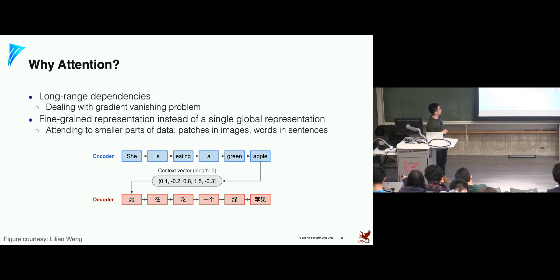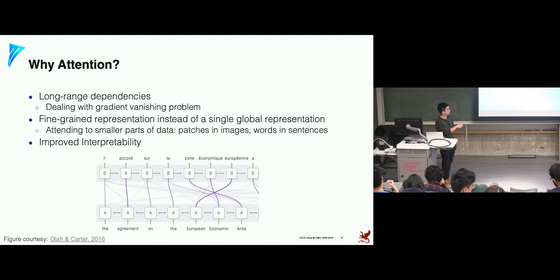The third advantage is improved interpretability. We can visualize the attention distribution and understand why a particular token was generated — because there's a corresponding token like 'agreement' in the input, so the model translates it to the corresponding output token.